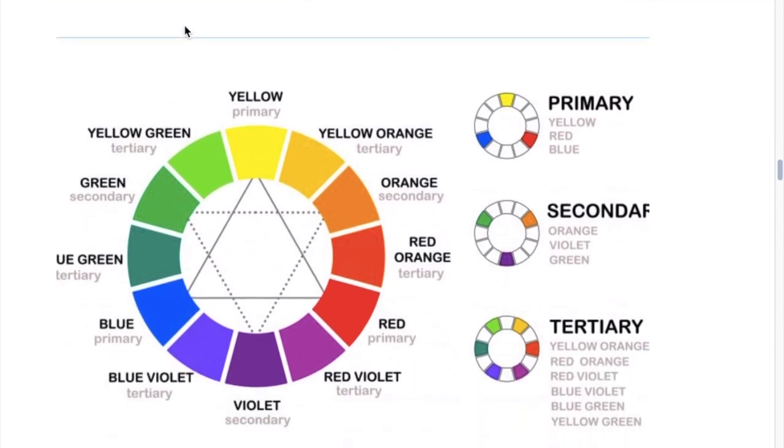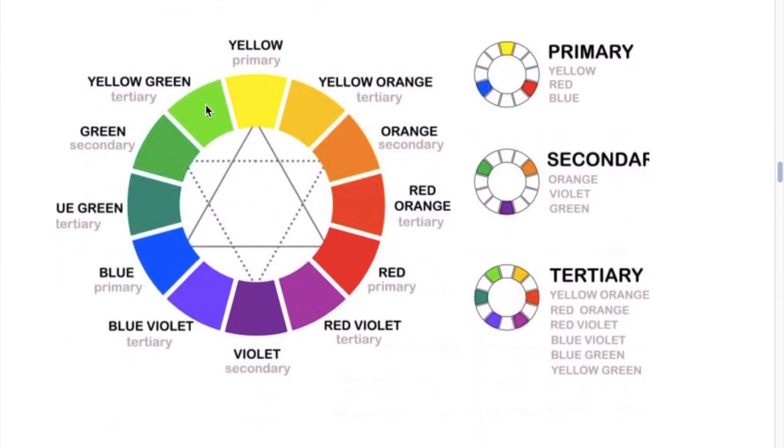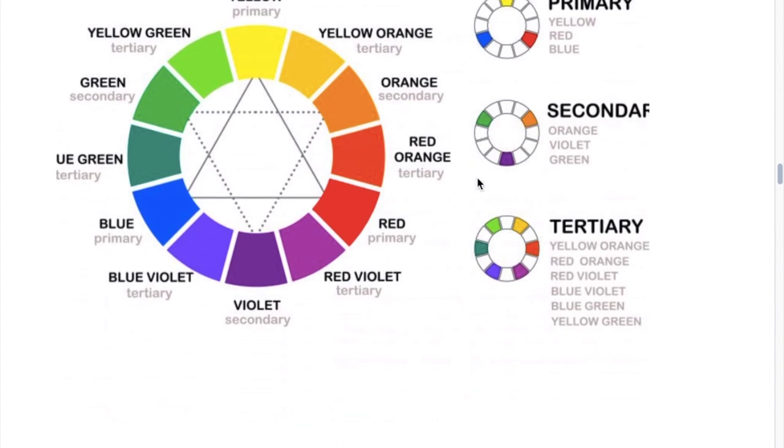Down below here we have some source materials. You can see what they're called. Yellow and green is a tertiary color. Primary yellow. Orange is a secondary. Green is a secondary. So you need to understand what these colors really are. Secondary, tertiary. We're only working with primary and secondary.